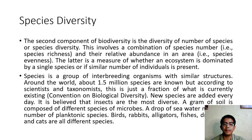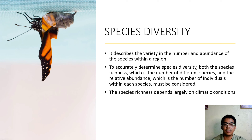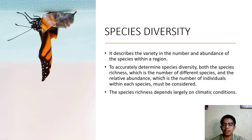Birds, rabbits, alligators, and cats are all different species. In short, species diversity is the diversity between different species. It describes the variety in number and abundance of species within a region. To accurately determine species diversity, both species richness — the number of different species — and relative abundance — the number of individuals within each species — must be considered. Species richness depends largely on climatic conditions.